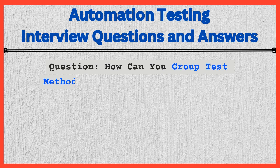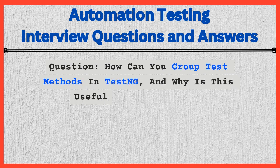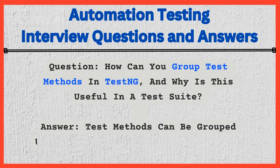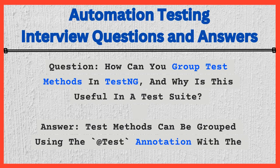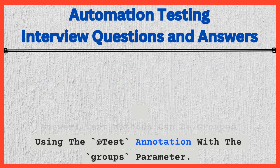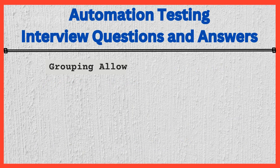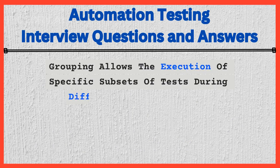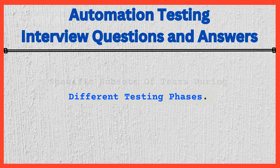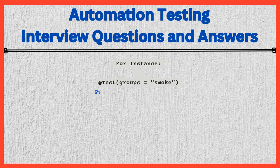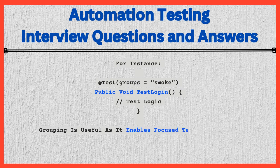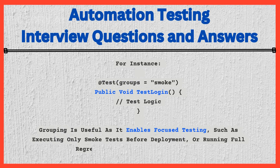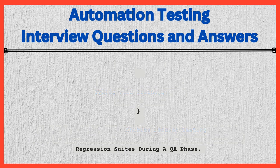Question: How can you group test methods in TestNG, and why is this useful in a test suite? Answer: Test methods can be grouped using the @Test annotation with the groups parameter. Grouping allows the execution of specific subsets of tests during different testing phases. For instance: @Test(groups = "smoke") public void testLogin() { // test logic }. Grouping is useful as it enables focused testing, such as executing only smoke tests before deployment, or running full regression suites during a QA phase.